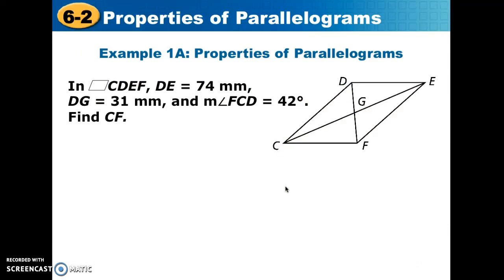Using these different relationships, we are going to determine what the length of CF is. So the first thing that I'm always going to recommend that you do is label your diagram. We know that segment DE is 74 millimeters long, and segment DG is 31 millimeters long. We also know that angle FCD in that lower left-hand corner is 42 degrees. We want to find what the length of CF is.